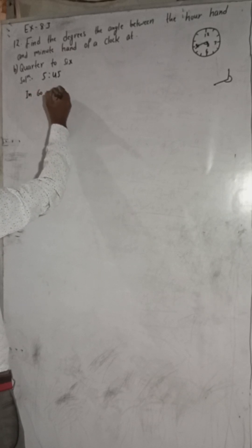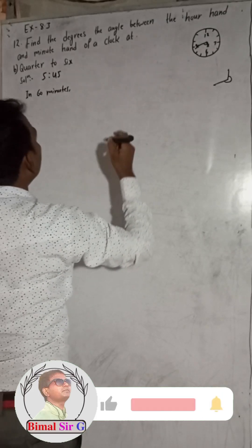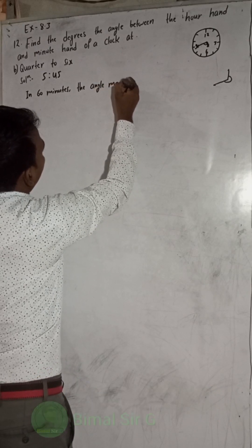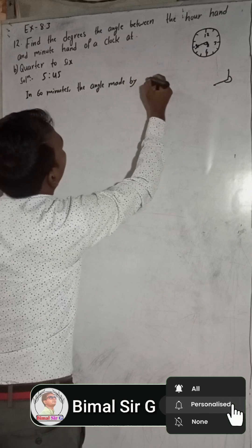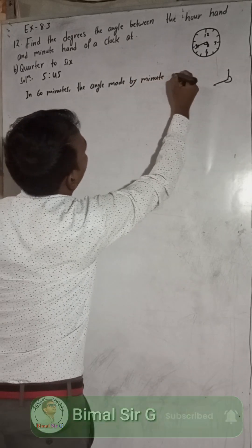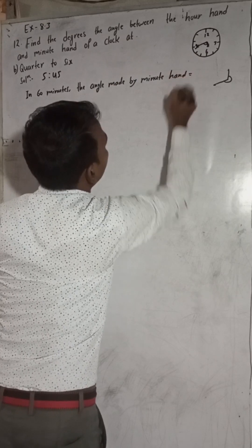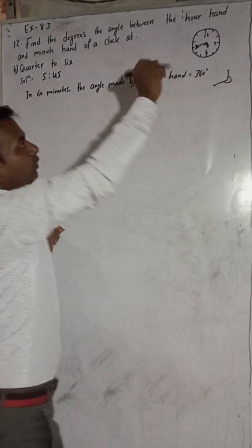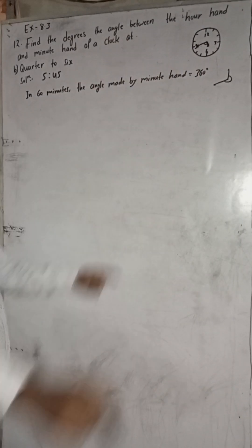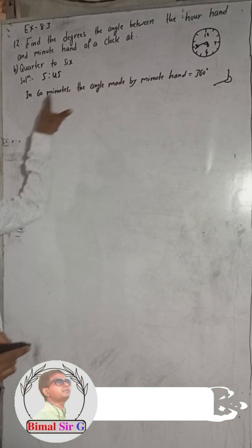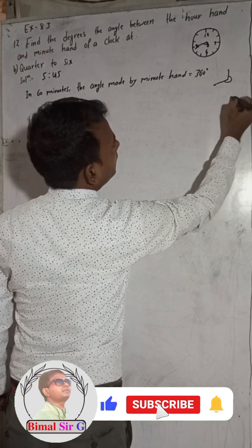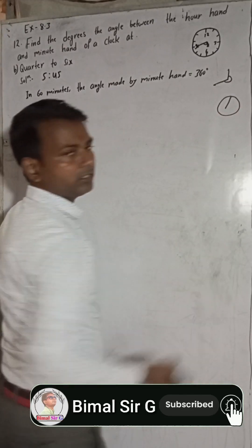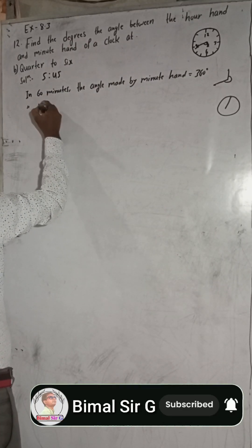In 60 minutes, the angle made by the minute hand is equal to 360 degrees — that is one complete rotation. In 60 minutes, the minute hand makes 360 degrees because it starts from 12, rotates all the way around, and reaches 12 again. So in one minute, the angle made by the minute hand is 360 divided by 60.